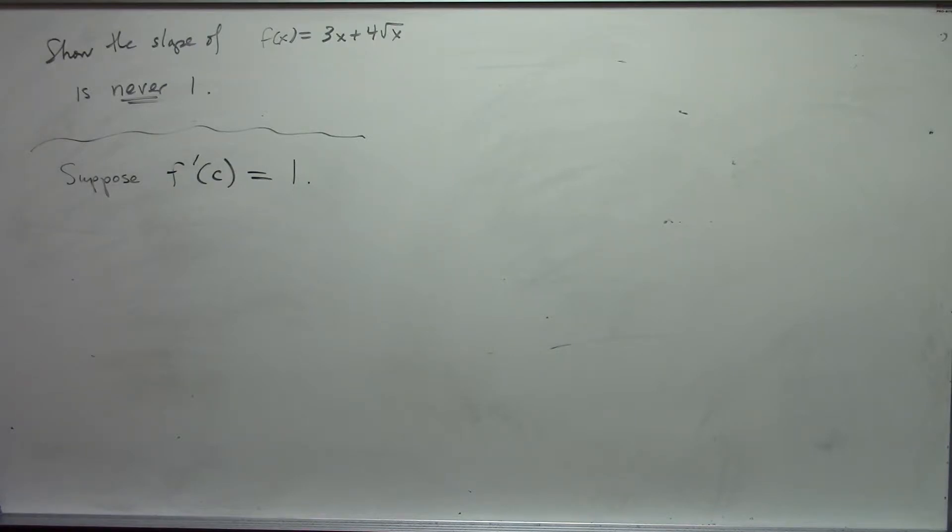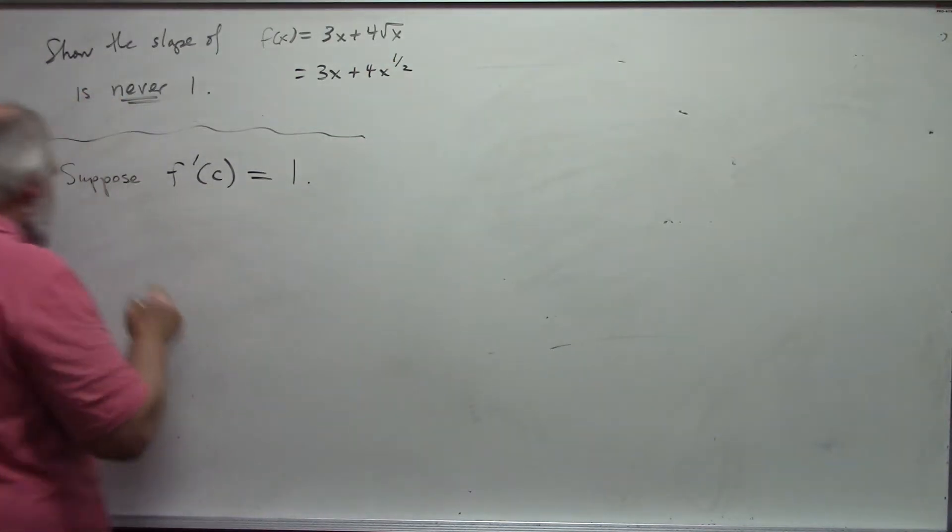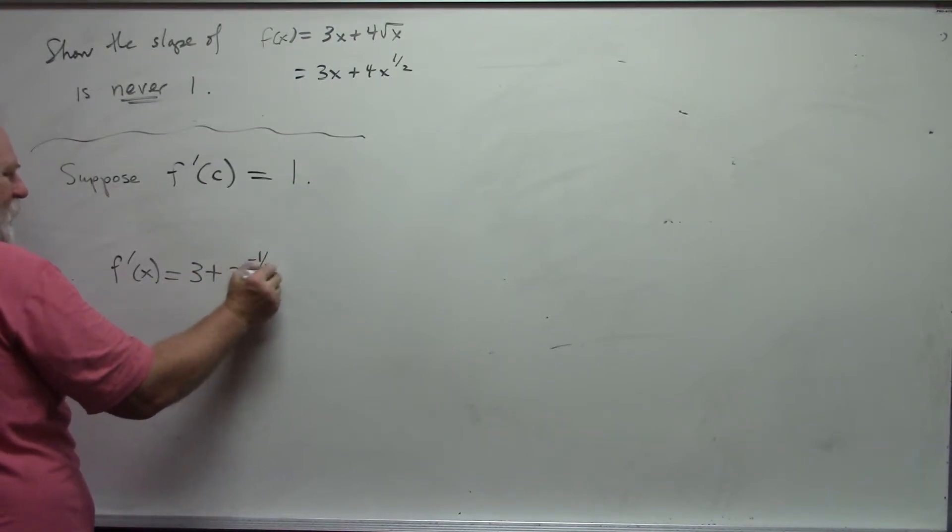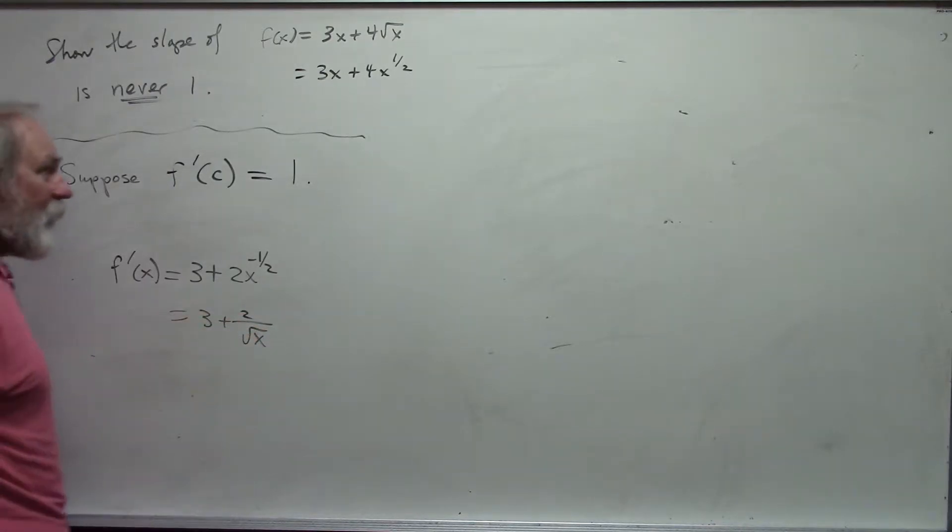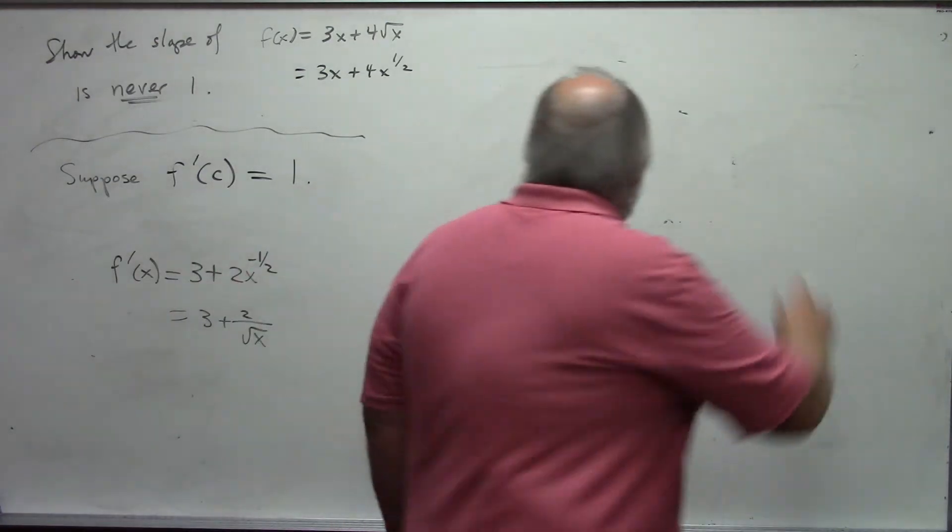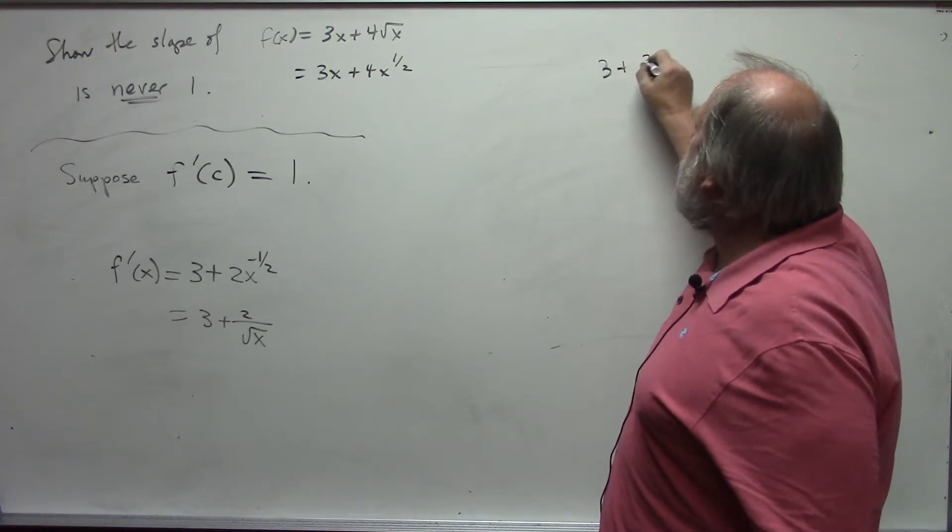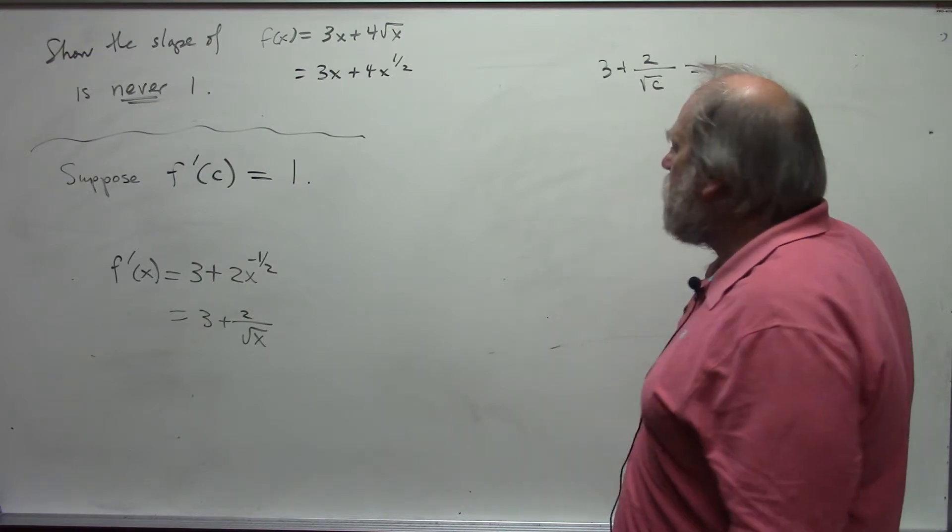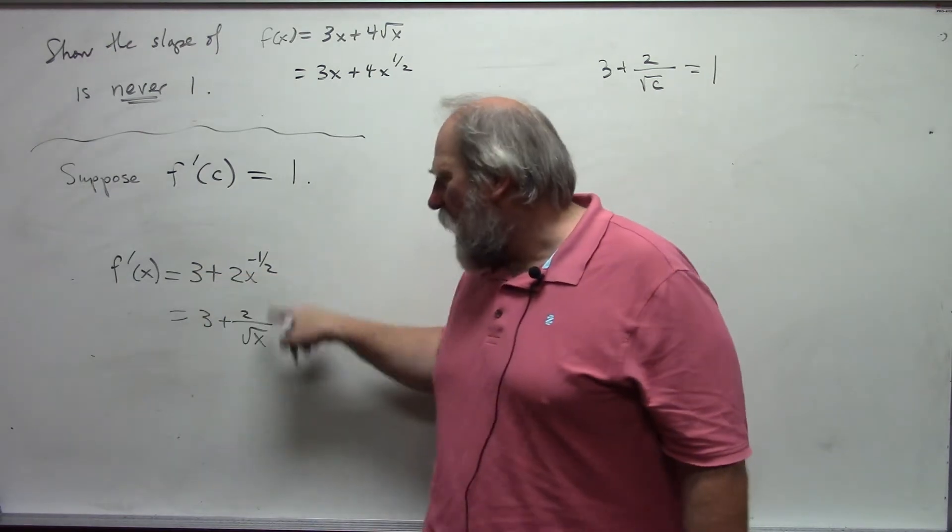Now, we need the derivative. Let me rewrite my function. So, my derivative in general, f prime of x would be 3 plus 2x to the negative 1 half or 3 plus 2 over the square root of x. And so, with that assumption, I get that 3 plus 2 over the square root of c would have to equal 1. The derivative at c is 1, literally, the derivative at c is 1.